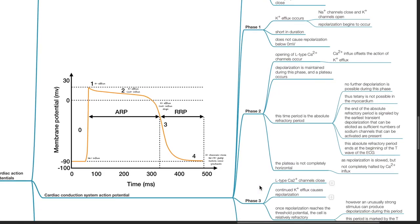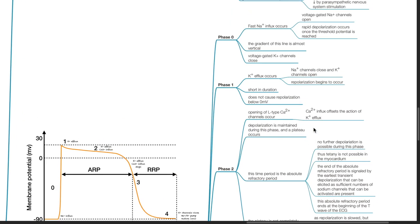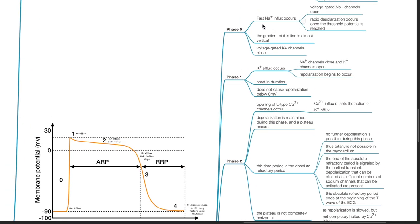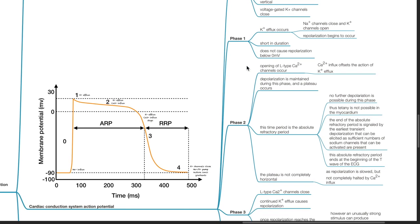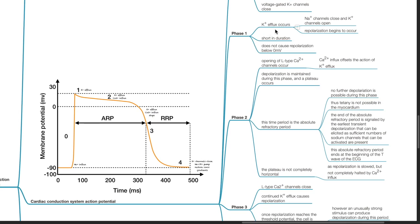Cardiac conduction system action potential. Phase 0: fast sodium influx occurs as voltage-gated sodium channels open, and rapid depolarization occurs once the threshold potential is reached — the gradient of this line is almost vertical. Voltage-gated potassium channels then close. During Phase 1, potassium efflux occurs as sodium channels close and potassium channels open; repolarization begins, and it is short in duration and does not cause repolarization below 0 mV.